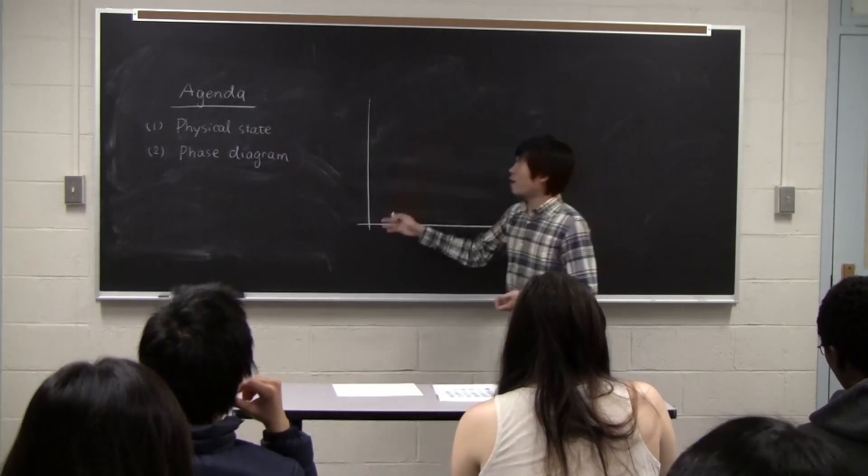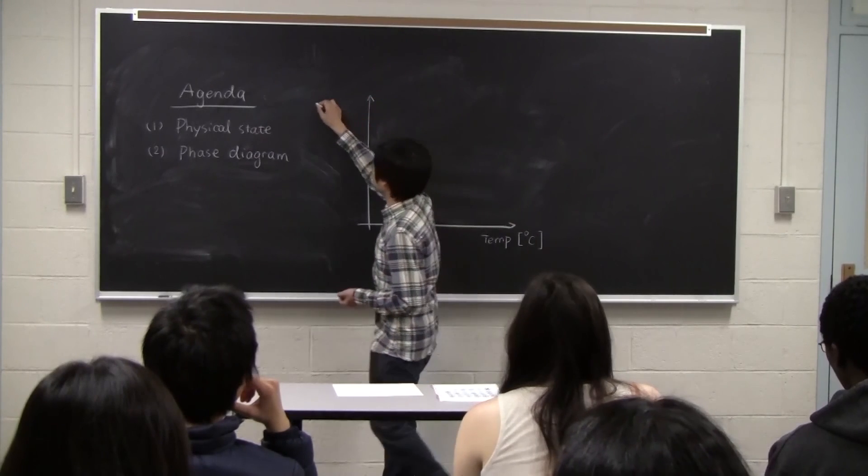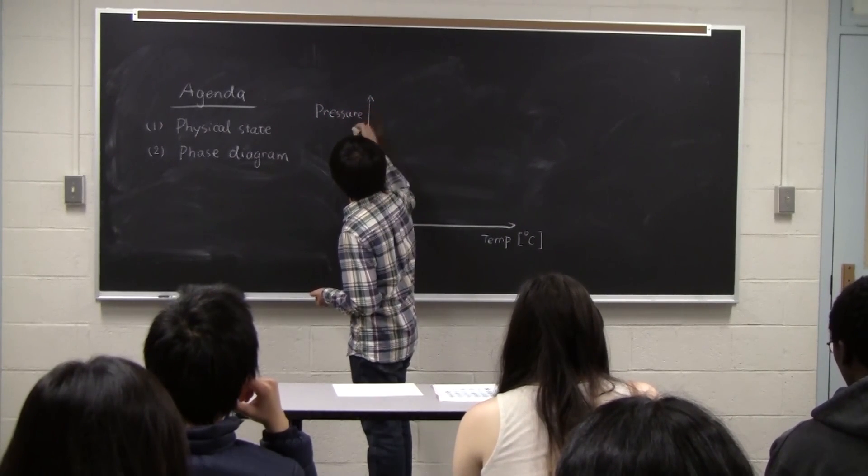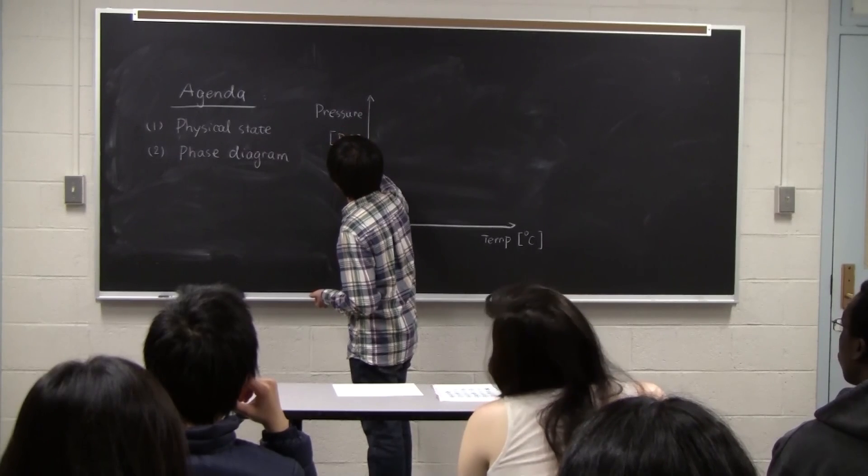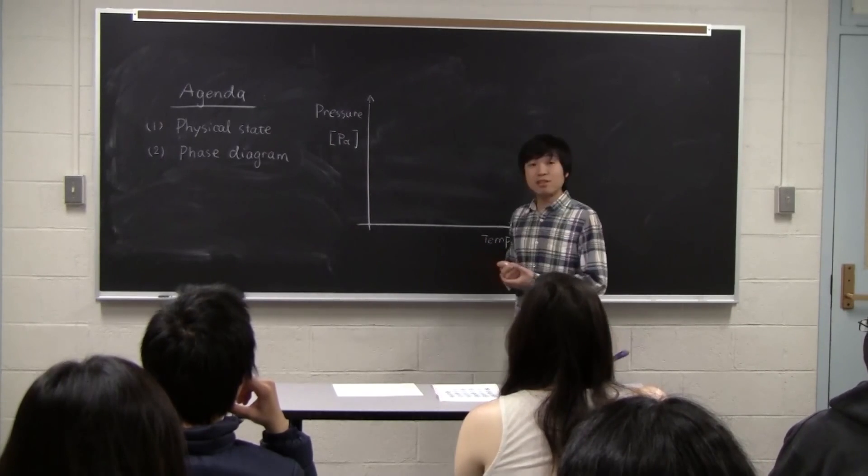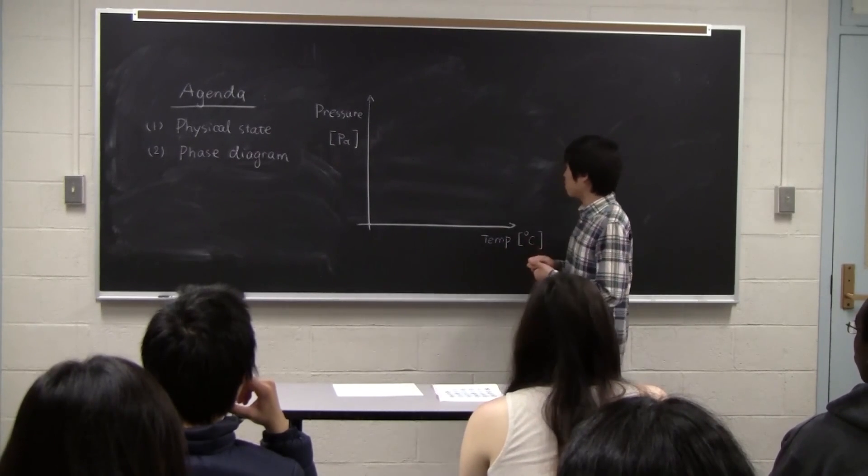And on the vertical axis, we have pressure with a unit of Pascal. Okay, as we just talked about, we have three different states of water existing in this diagram.